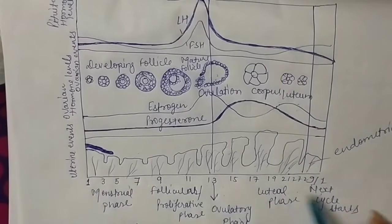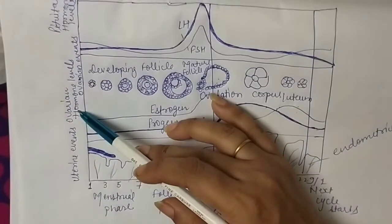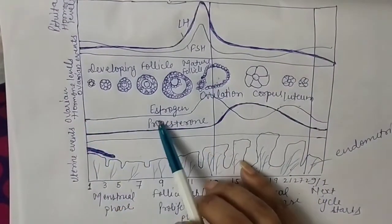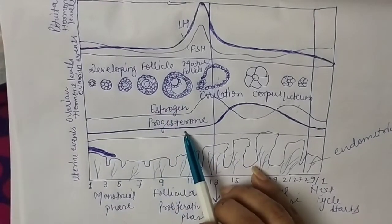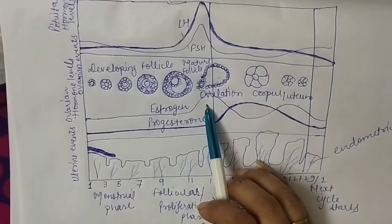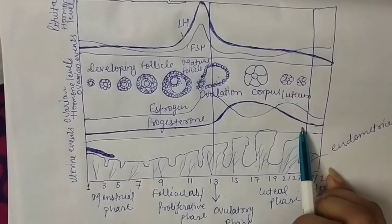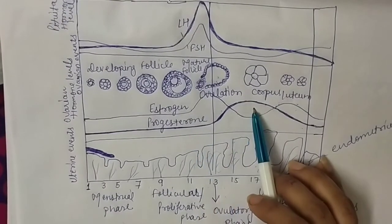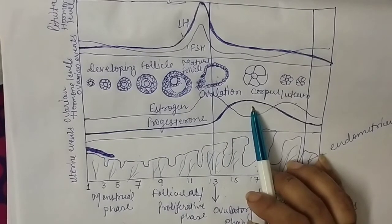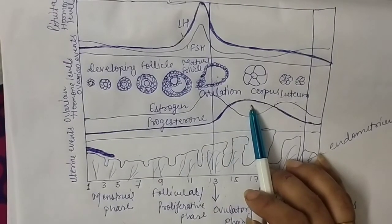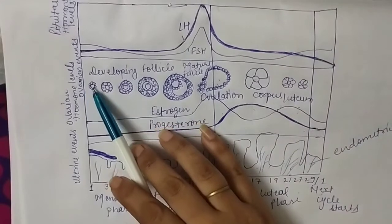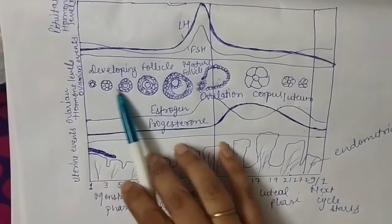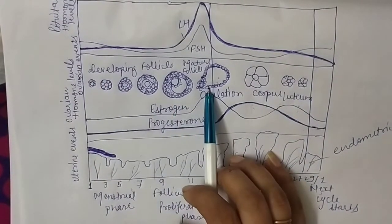Second is ovarian hormones - estrogen and progesterone. Estrogen increases at the time of ovulation and also when corpus luteum degenerates. Progesterone level increases when corpus luteum forms because it's necessary to maintain pregnancy. Third, changes in the ovary: follicle develops first, then Graafian follicle forms, ruptures, and corpus luteum forms.